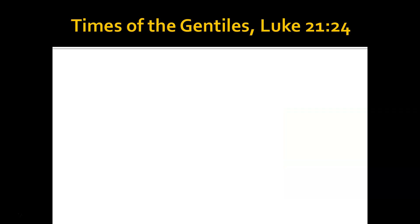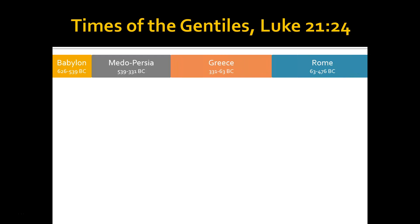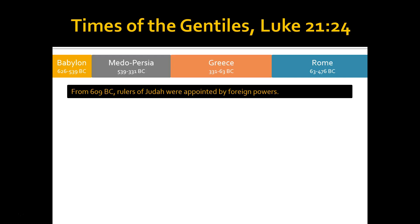This period we can refer to — and the Lord Jesus referred to — as the times of the Gentiles. As we think about Babylon, Medo-Persia, Greece, and Rome, this is the times of the Gentiles. From 609 BC, when Nebuchadnezzar first came into Israel, from that point on the rulers of Judah were always appointed by foreign powers — the Babylonians, the Medo-Persians, the Greeks, the Romans — and so they were always under foreign domination. They had a measure of independence for a while, but that independence was still granted to them by a foreign power.